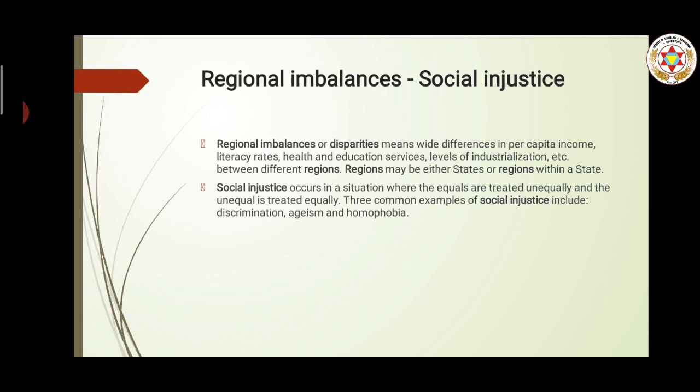Social injustice is also a situation of discrimination based on factors like ageism — where aged people are not given importance or age is used as a factor of discrimination — or caste, or any kind of factor that creates discrimination among people. Any such situation is regarded as social injustice.